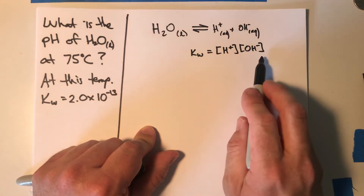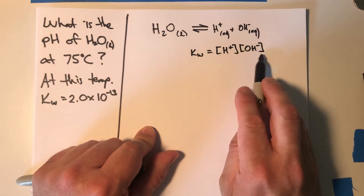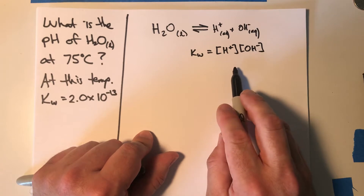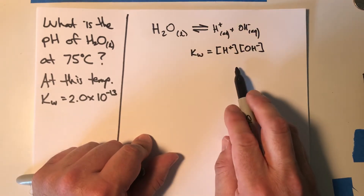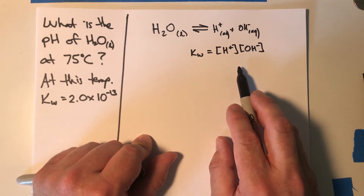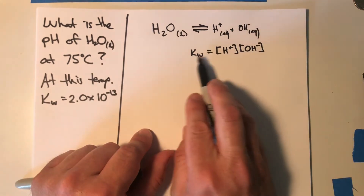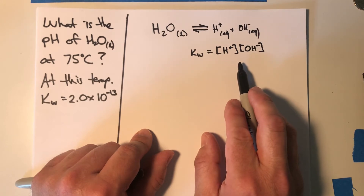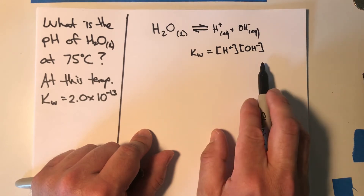Normally that would be products over reactants, so you'd have the water concentration in the denominator, but because water is a liquid we treat its concentration as 1 — it doesn't change over the course of the equilibrium due to its density. So this would be over 1, which we're not going to write, and so this is just our Kw expression.